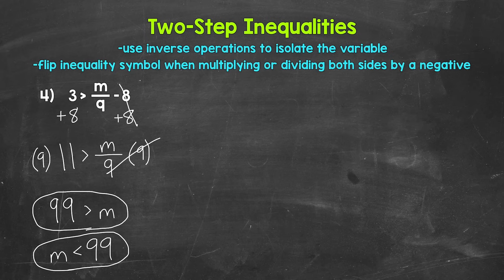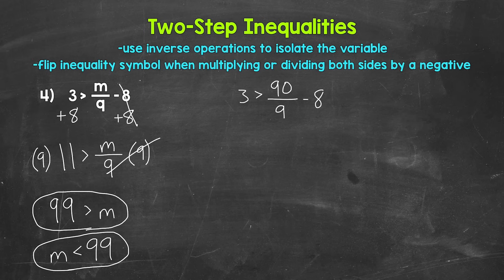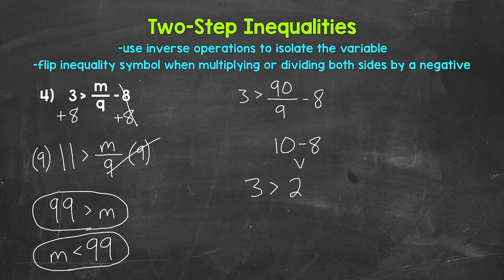Let's plug in a value less than 99 to check. Let's use 90, which divides nicely by 9. 90 divided by 9 is 10, and 10 minus 8 gives us 2. 3 is greater than 2 — so that does work out. Our final answer is m is less than 99, meaning m can be any value less than 99.